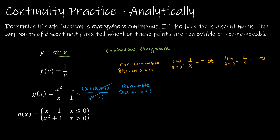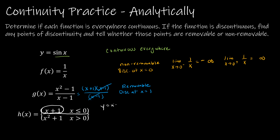Looking at the last one, I have a piecewise function. A piecewise function basically takes your domain and puts it into different pieces. This is saying anything to the left of 0 and including 0, and then anything to the right of 0. To the left of 0 I'm dealing with x plus 1, which is a linear function — continuous everywhere. To the right of 0 I've got x squared plus 1, which is a quadratic function — also continuous everywhere with no asymptotes. So the only point I'm concerned about is at x equals 0.